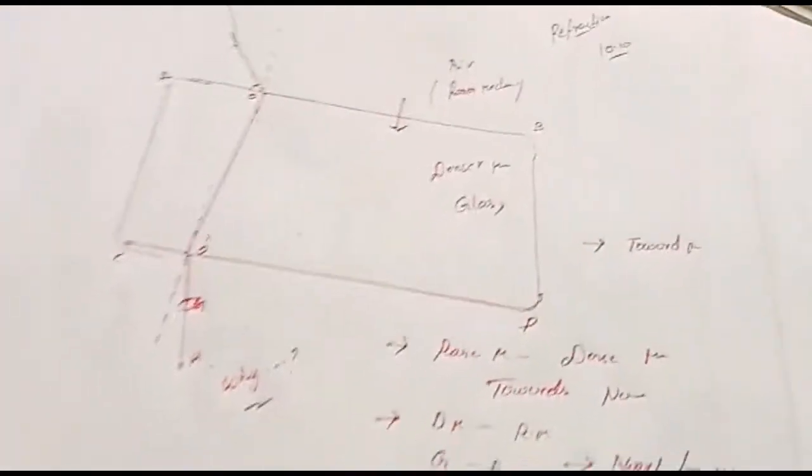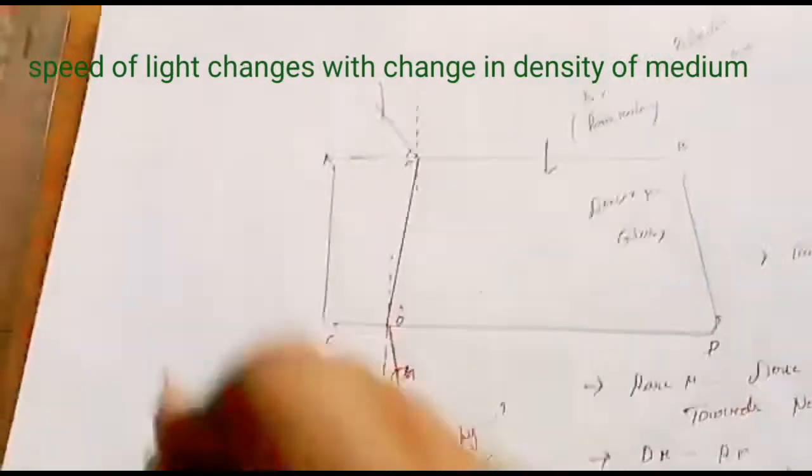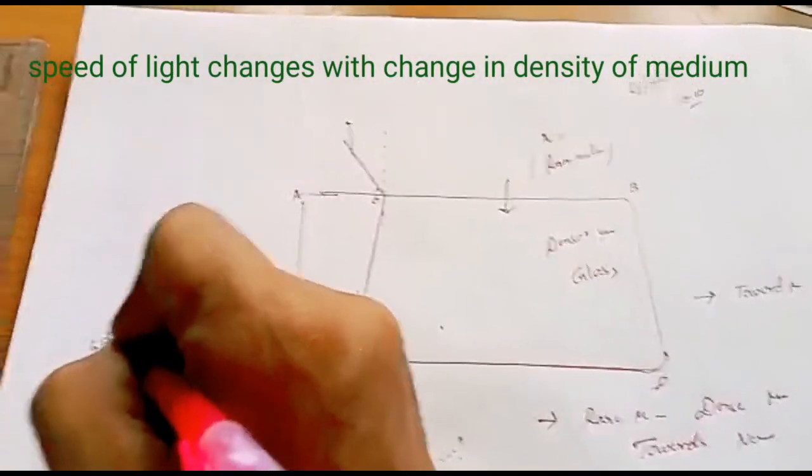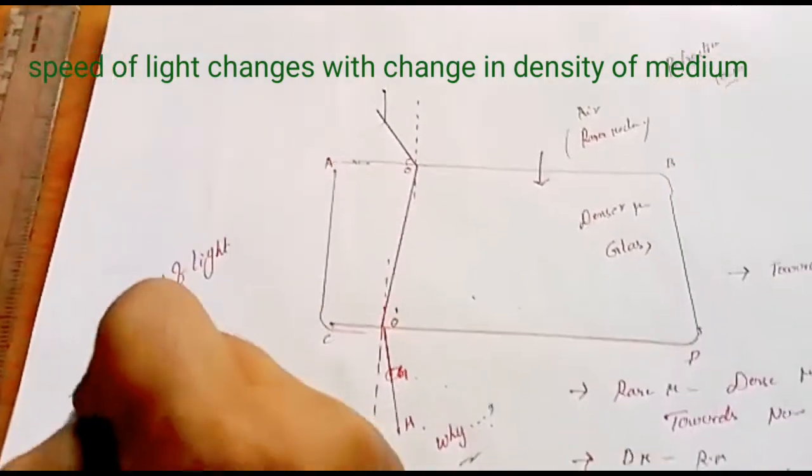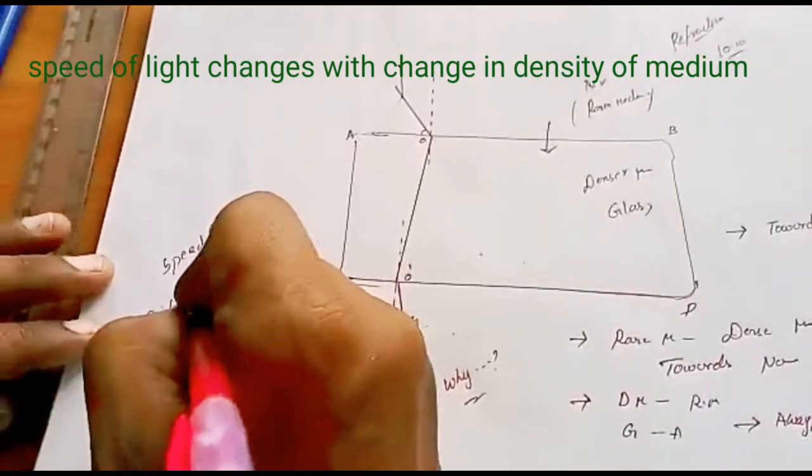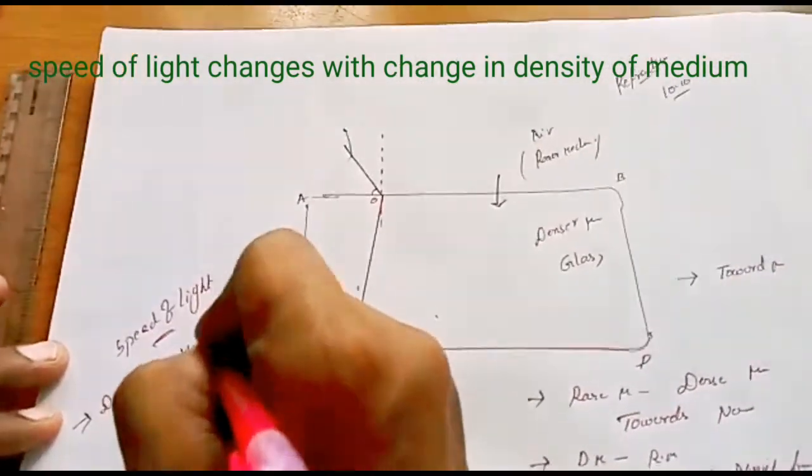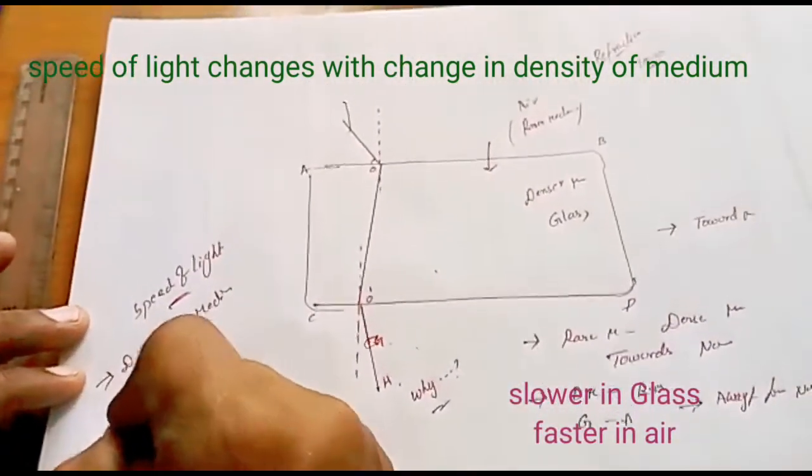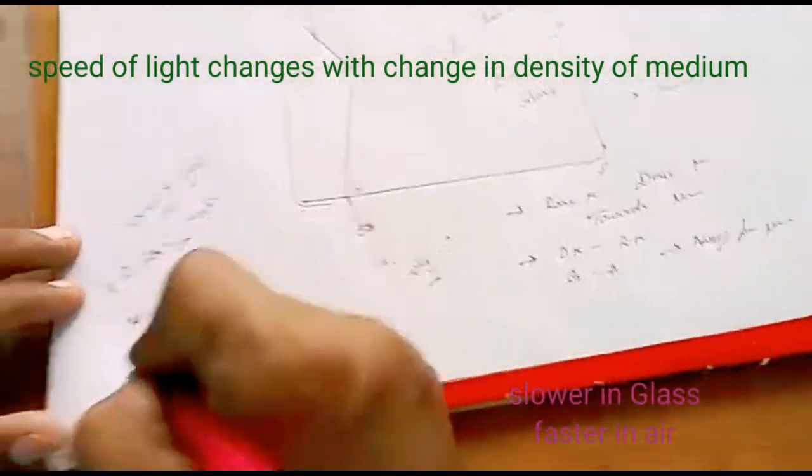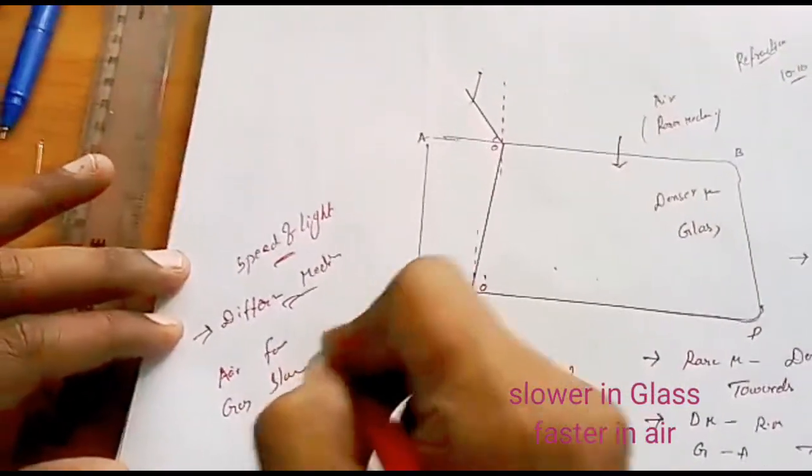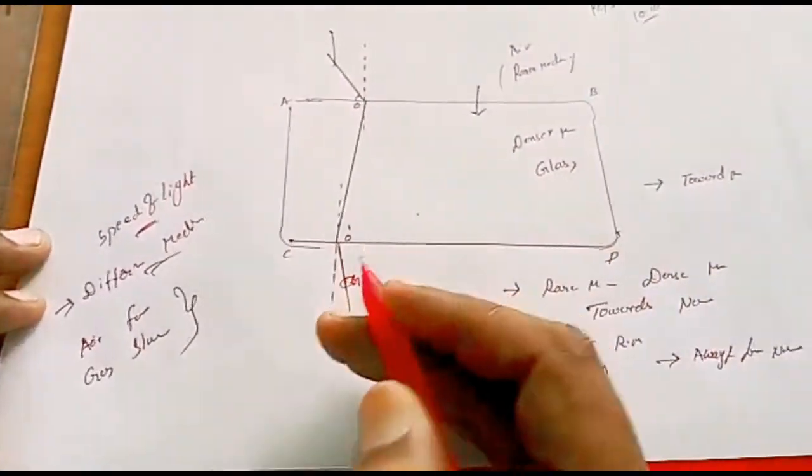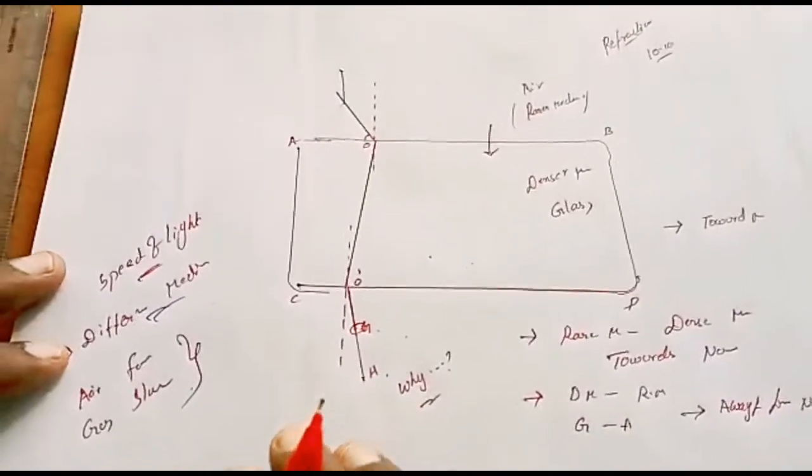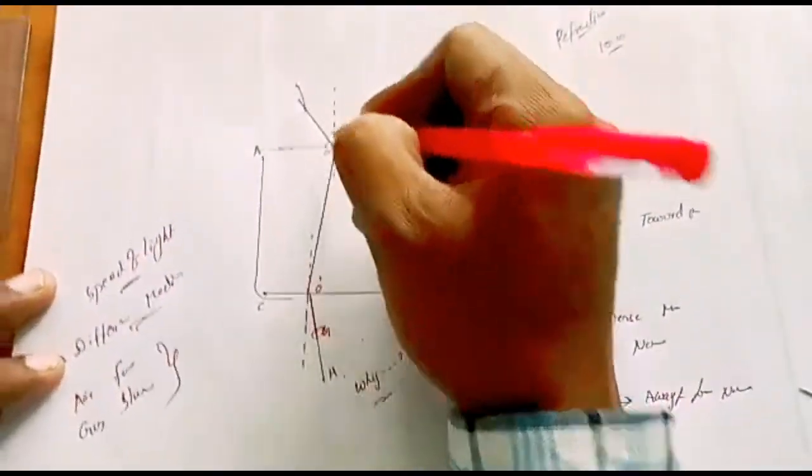The simple answer here is, speed of light is altered. Speed of light is different in different mediums. Speed of light in air is faster. Speed of light in glass is slow. So when density changes, speed of light changes. So the refracted ray appears as bent. So this is incident ray, this is refracted ray, and this is emergent ray.